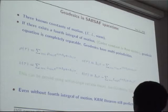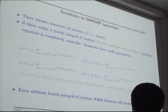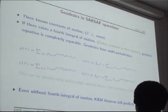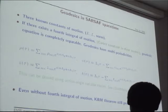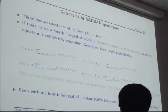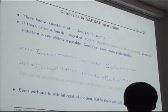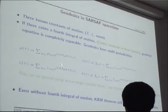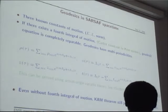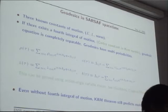Interestingly, even if we don't have a fourth integral of motion and only have these three integrals, there is a mathematical theorem called the Kolmogorov-Arnold-Moser (KAM) theorem that says this system — the geodesic — can still be written in this manner. If the system is non-integrable, we call this system quasi-multiperiodic, not strictly periodic.